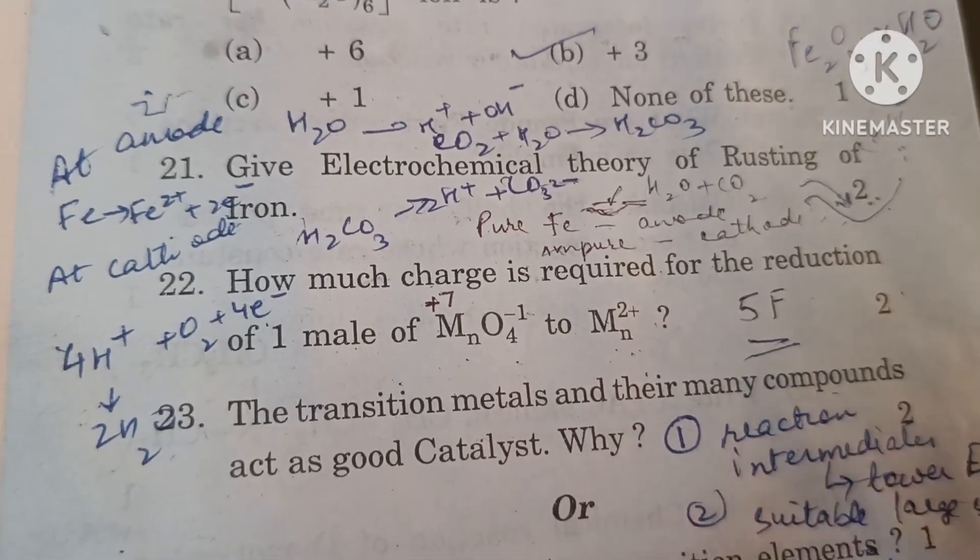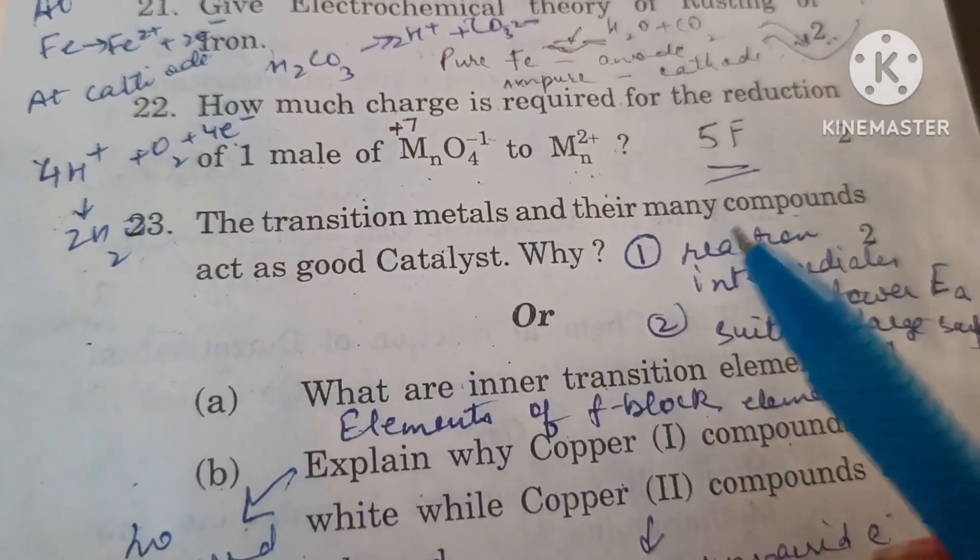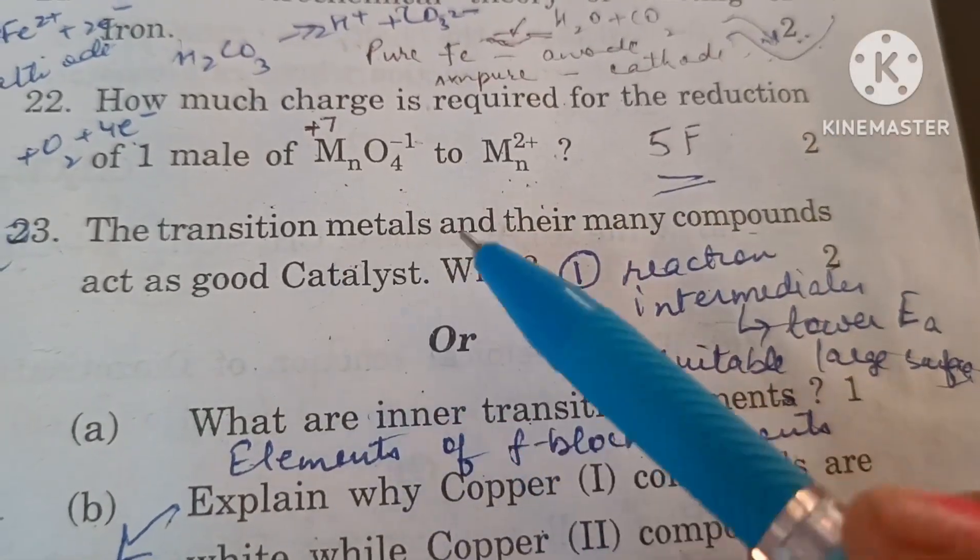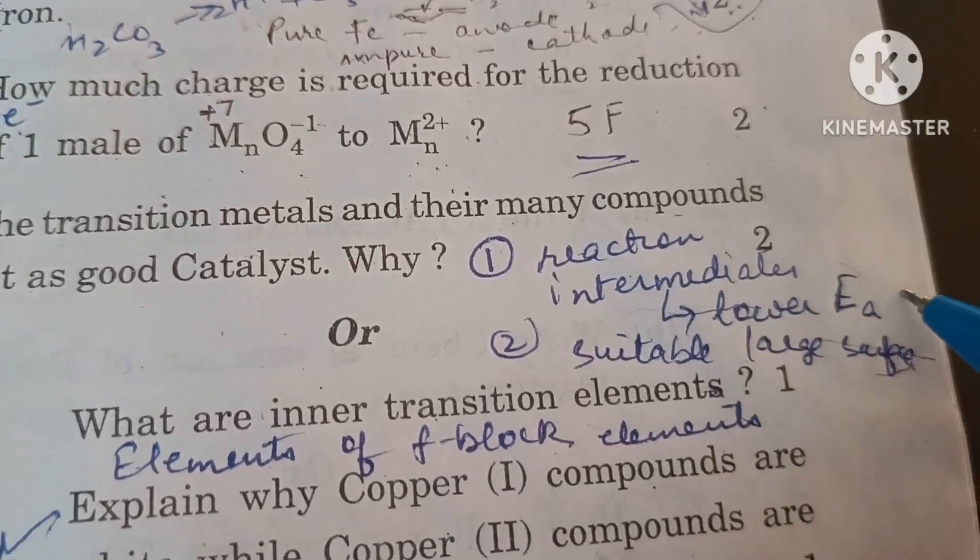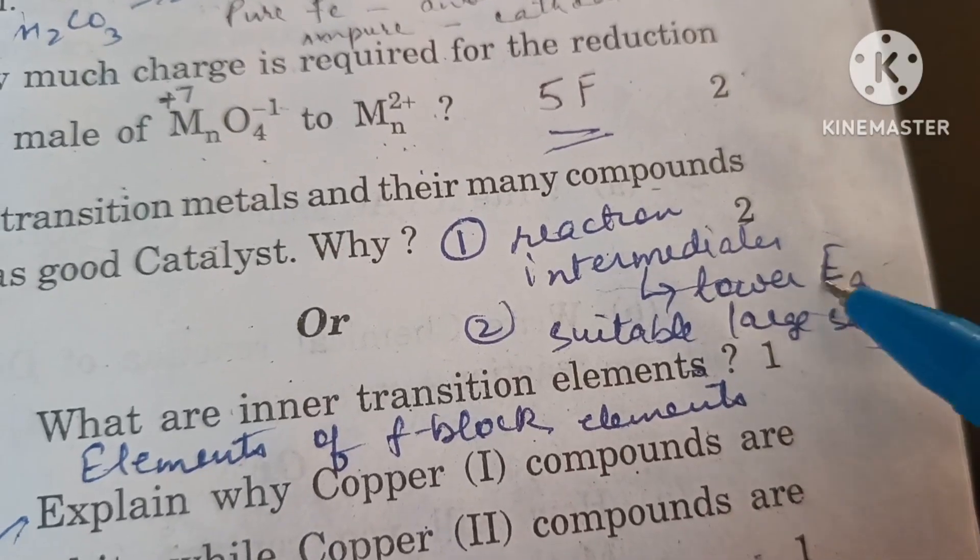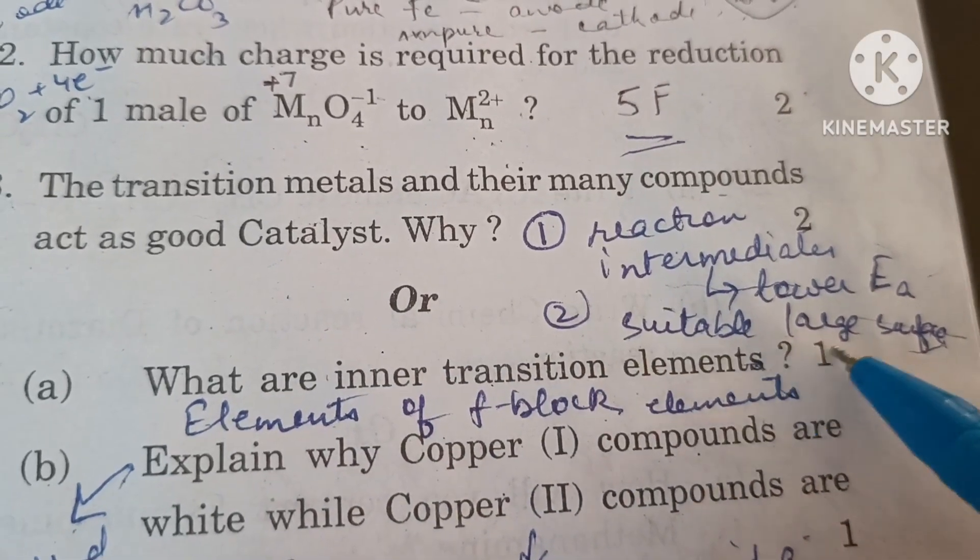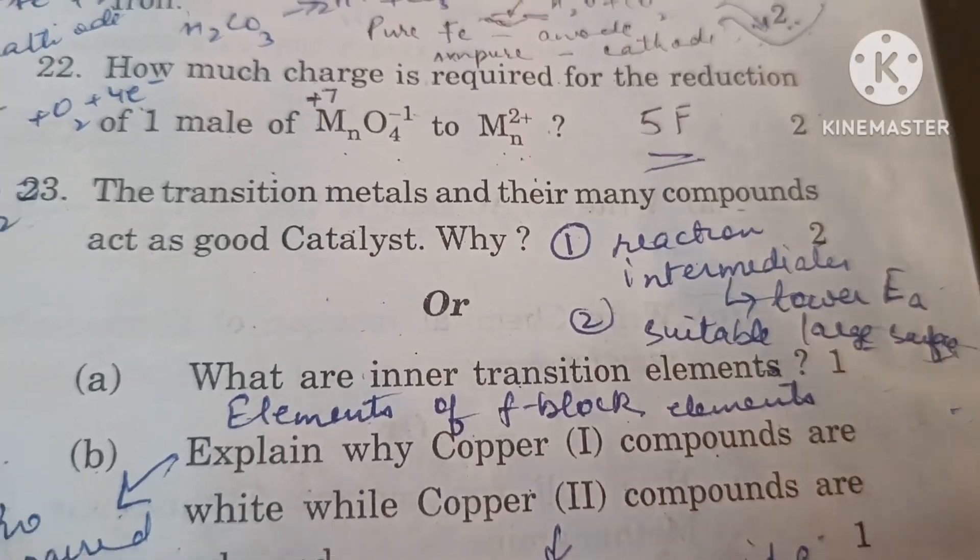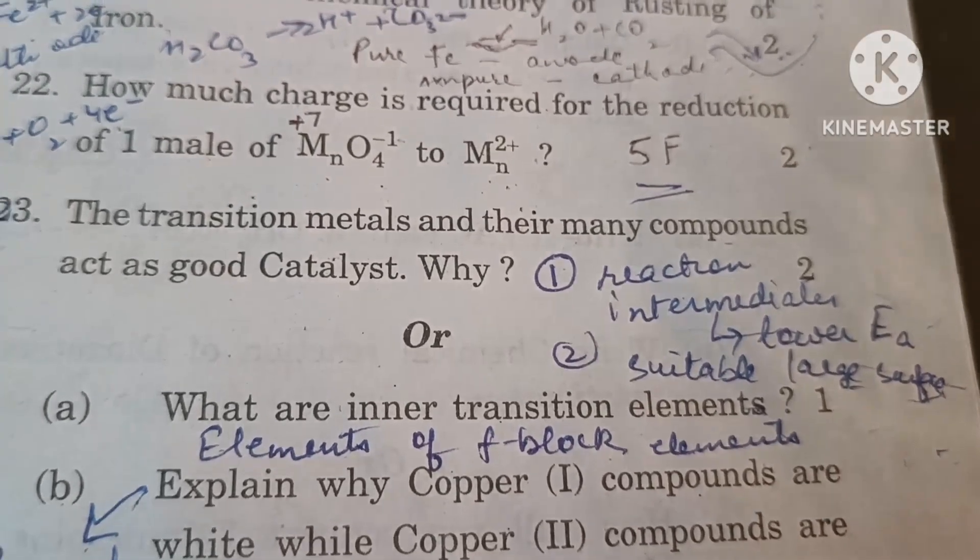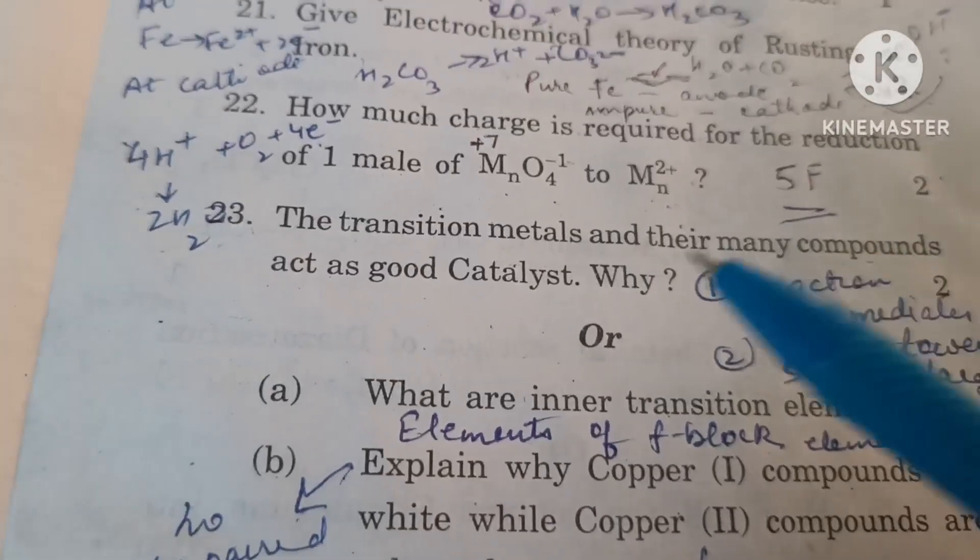Transition metals and their many compounds act as good catalysts. This is because the transition metals are capable of forming reaction intermediates which lower the activation energy needed for reaction. Also when they are acting as catalyst, they provide suitable large surface area for reactants to get adsorbed on and the reactants come closer and thus the process of combination gets fastened up.